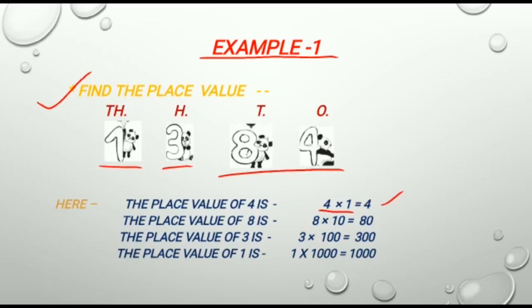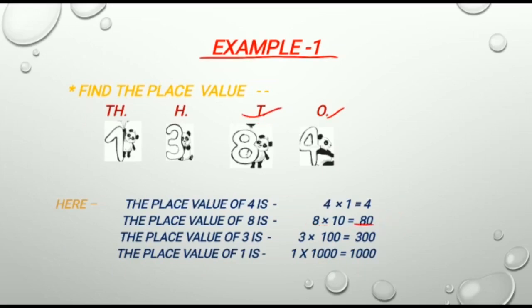Because in this number 4 is at 1's place. The place value of 8 is 8 multiplied by 10 is equal to 80. Because in this number 8 is at 10's place. The place value of 3 is 3 multiplied by 100 is equal to 300. Because in this number 3 is at 100's place.